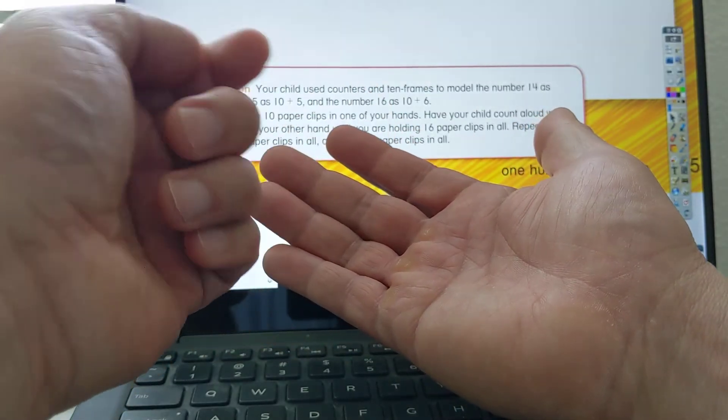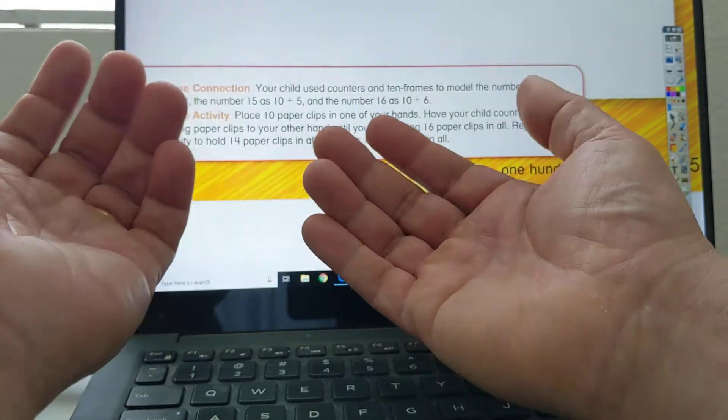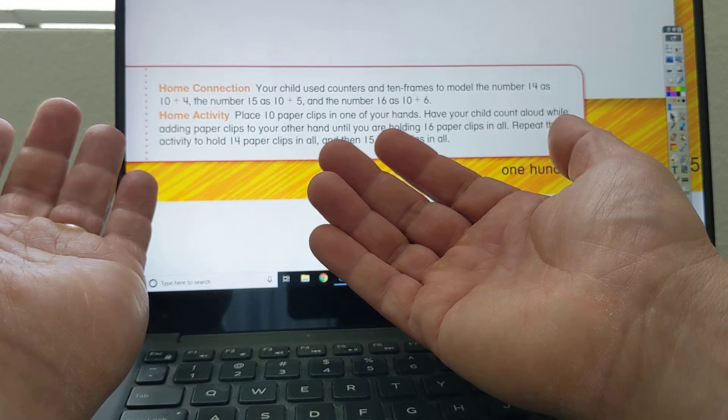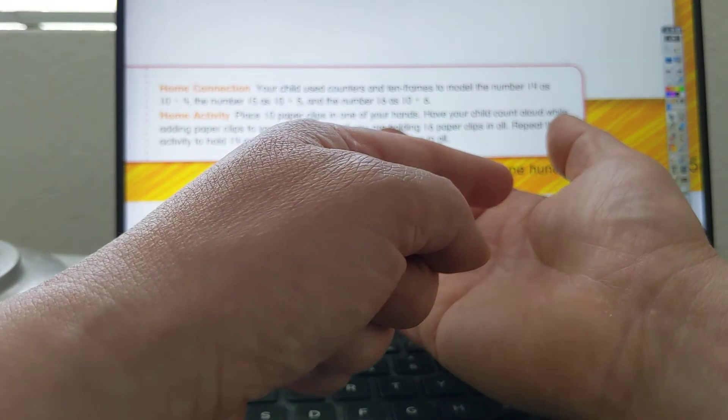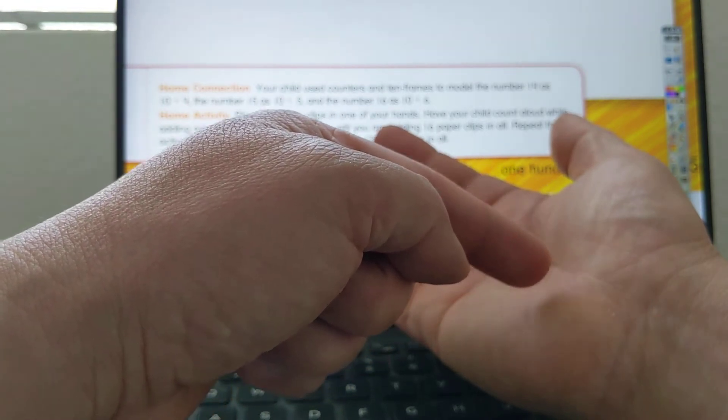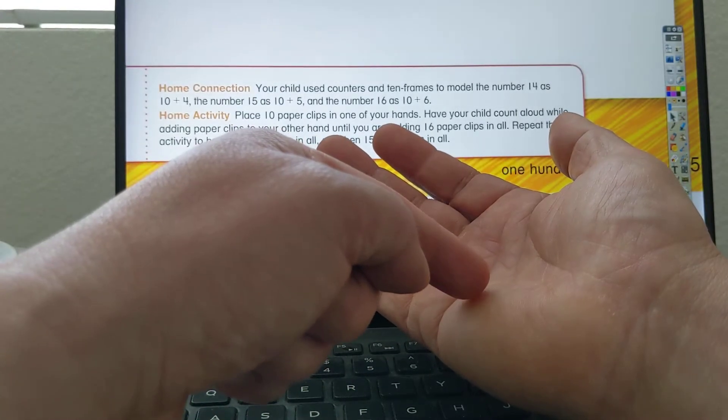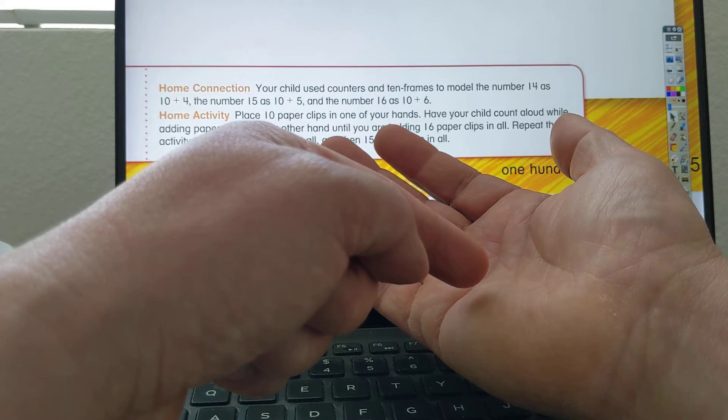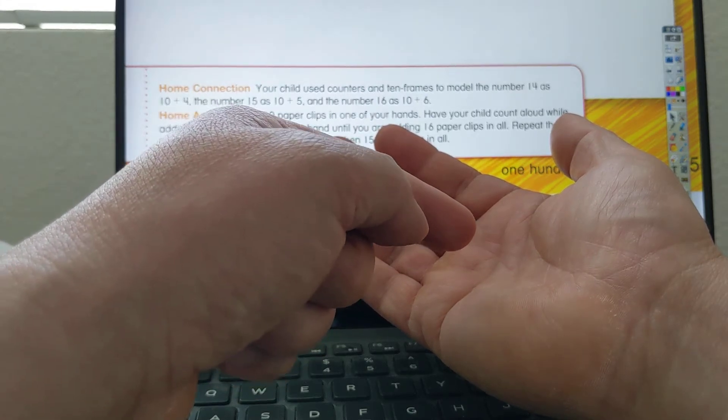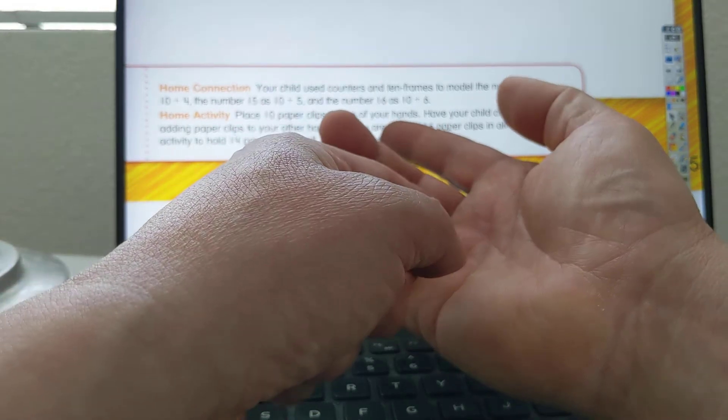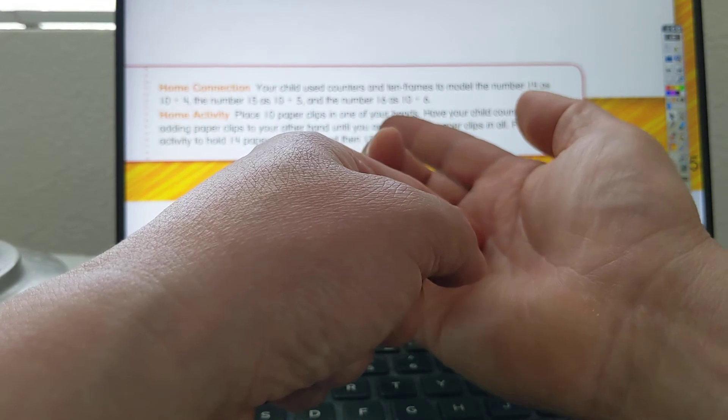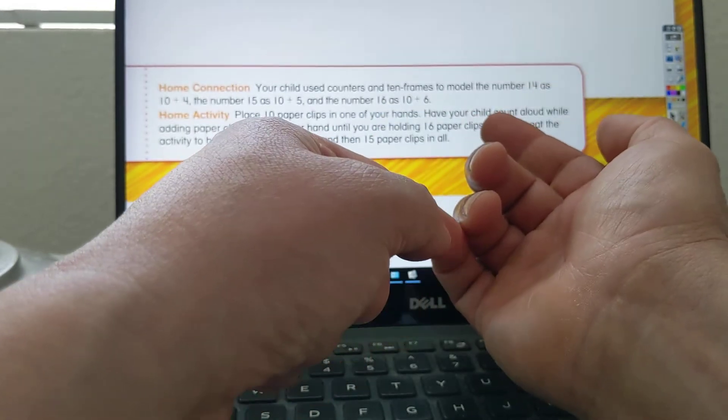And then you would have your child count. So you would count 1, 2, 3, 4, 5, 6, 7, 8. So you got 10 paper clips in one of your hands. Have your child, that's you. Your parent will hold 10 paper clips. You will count 1, 2, 3, 4, 5, 6, 7, 8, 9, 10.